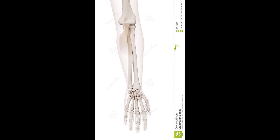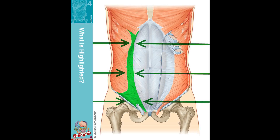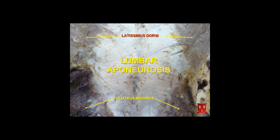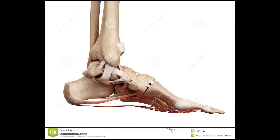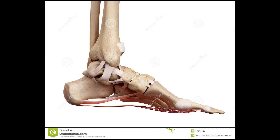This article incorporates text from a publication now in the public domain: Chisholm, Hugh, ed. 1911. Aponeurosis. Encyclopedia Britannica, 11th ed. Cambridge University Press. Gray's anatomy S104 Aponeurosis.